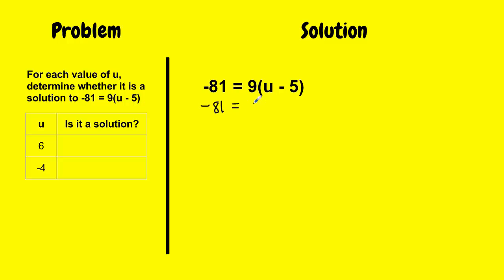I do negative 81 equals 9 times. Now, instead of writing my u, I'm going to switch it out with the 6. Because I want to check, is that a solution? So I'll put 6 in place of u and copy everything else the same exact way.